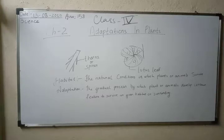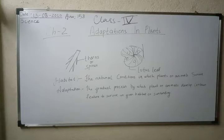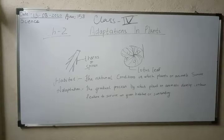We are going to cover all these topics in this chapter. To begin with, there is a fill-in-the-blanks written here: 'This is the stem of a dash plant and it has dash which protect it from grazing animals.' We know that some plants have thorns on them.